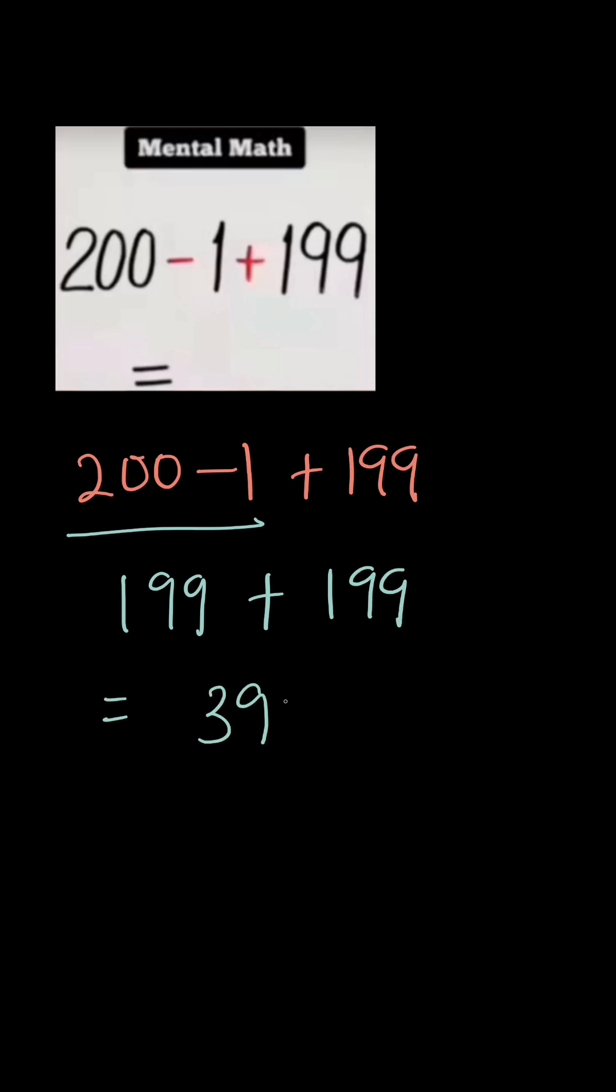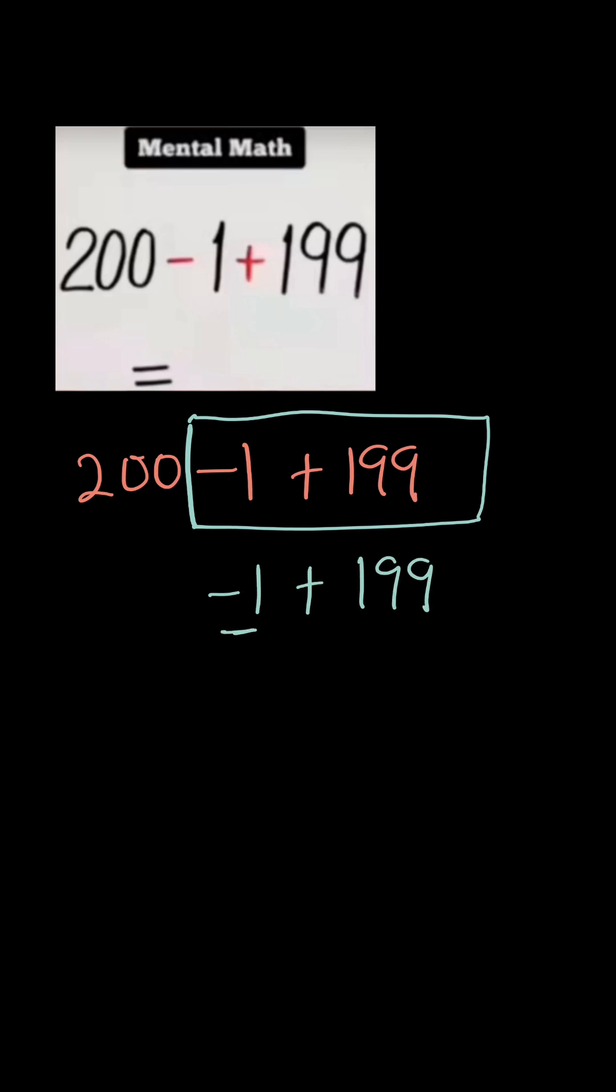Or if you don't want to follow the order of operation, you can decide to tackle the last two. With that one, you say okay, let me deal with these two first. So then that will be negative 1 plus 199. Remember this is a negative number, so you have negative 1 plus 199.